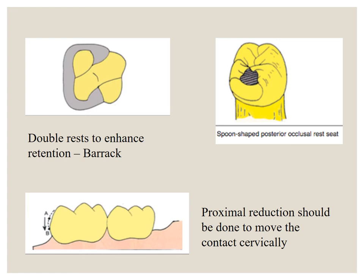The double rest technique was proposed by Back. It has axial coverage on both the proximal walls, and rest seats are located near the central grooves at the mesio-occlusal and disto-occlusal sides, resisting displacement from occlusal forces. A spoon-shaped occlusal rest can also help retention. Proximal reduction should be done to move the contacts a little cervically to gain more retention and surface area.